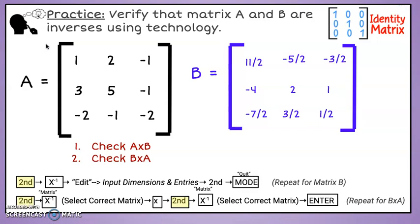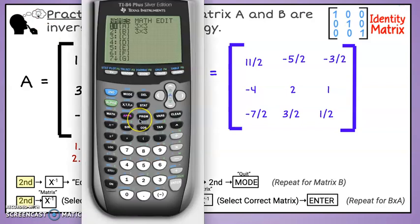We will use these steps in the calculator similar to the previous example. Again, these are provided on your capture sheet. Both matrices A and B have been entered here. I will now check both products.